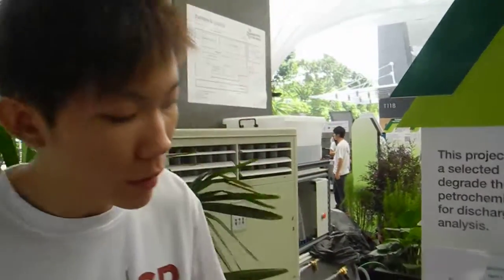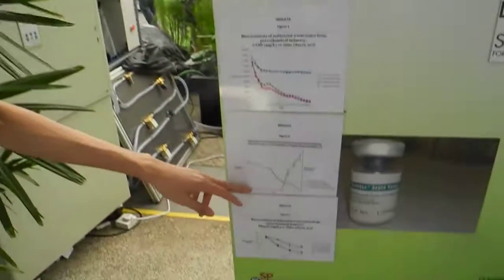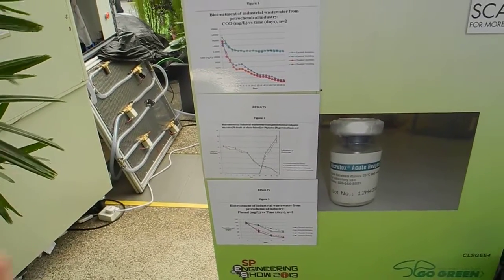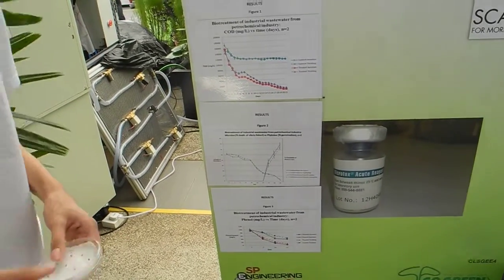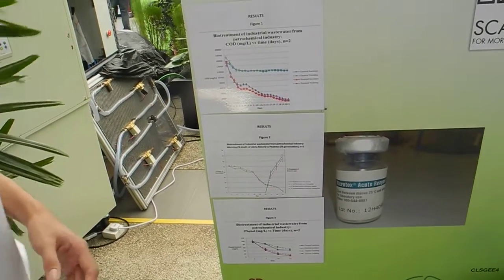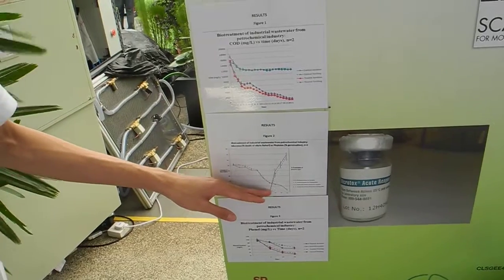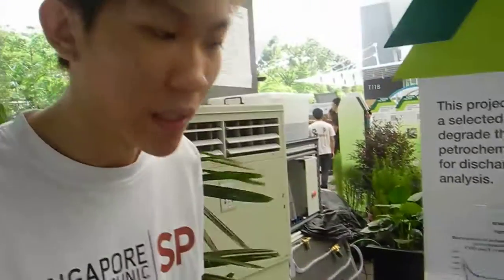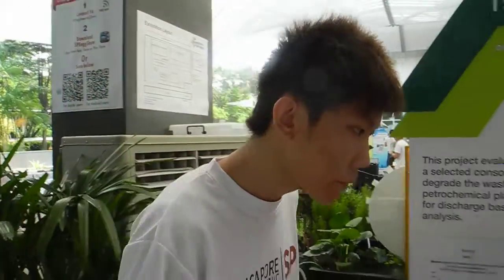The higher the seed germination, the lower the toxicity. As we can see from the graph, in the first 15 days of our treatment the wastewater is still too toxic for the seeds to germinate. However, after 15 days the wastewater is less toxic and the seeds can germinate. We managed to bring the seed germination up from 0% to 70–80%.